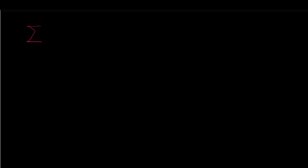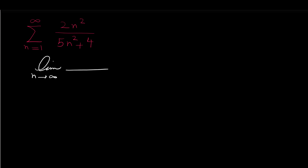Consider this series: sigma n from 1 to infinity of 2n squared over 5n squared plus 4. If we want to use the divergence test to check if this series is convergent or divergent, we have to find the limit of 2n squared over 5n squared plus 4 as n approaches infinity.